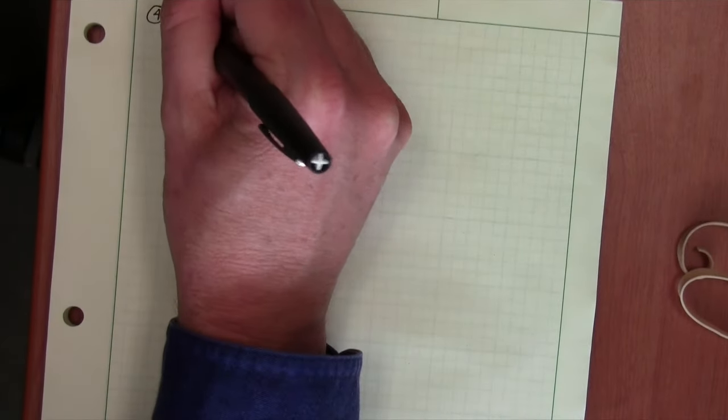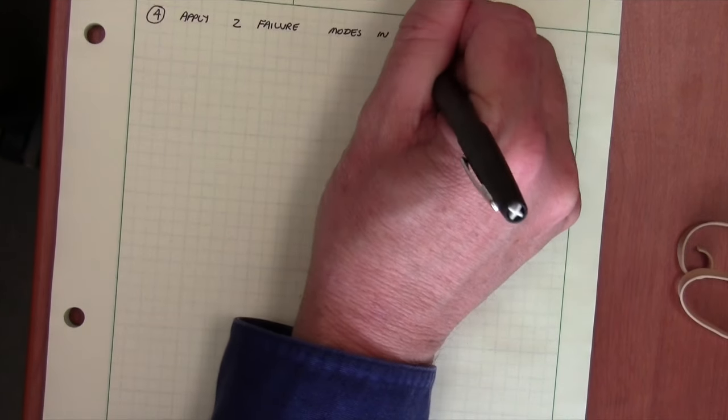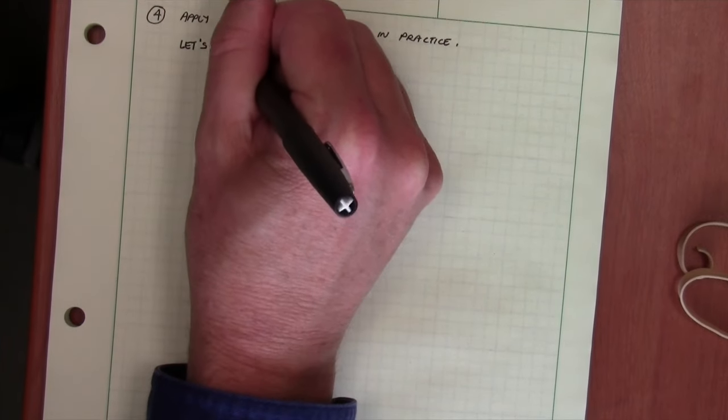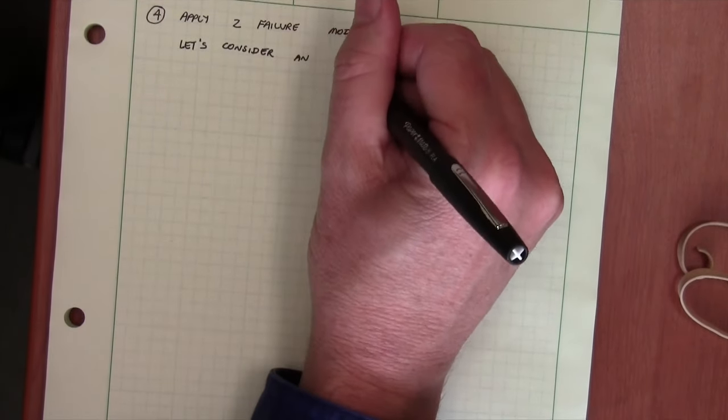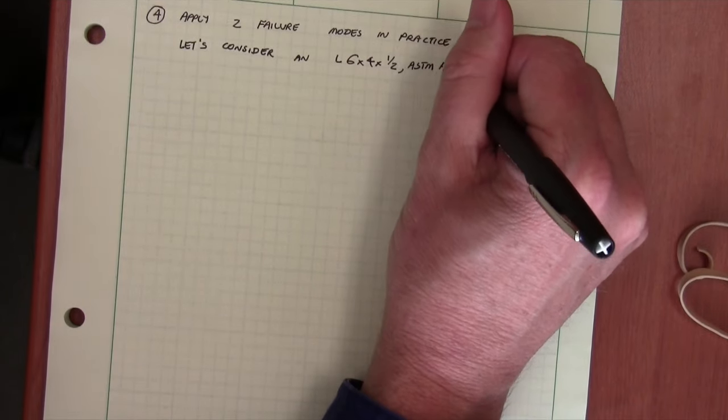Let's finally take a look at our fourth objective, to put these two failure modes in practice. So we're going to think about a little different example here, again with an angle. This is an angle six by four by a half that is ASTM A572 grade 50.